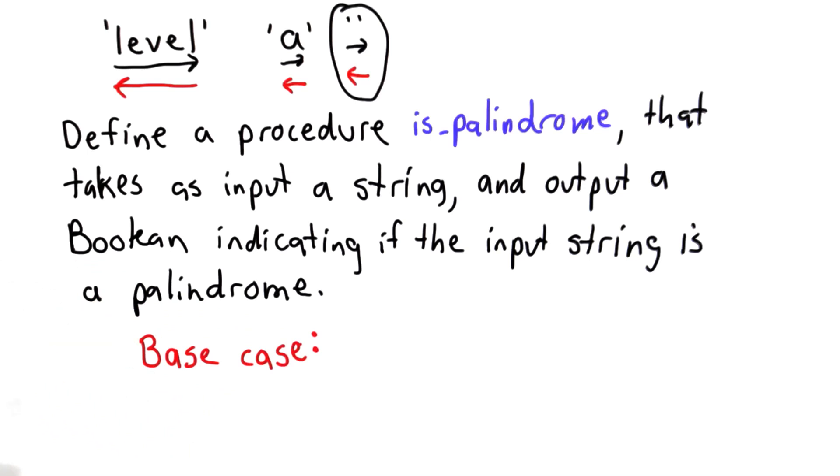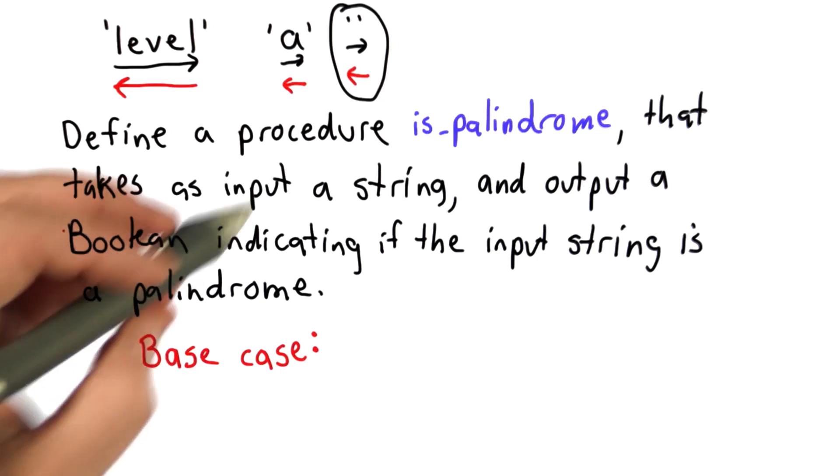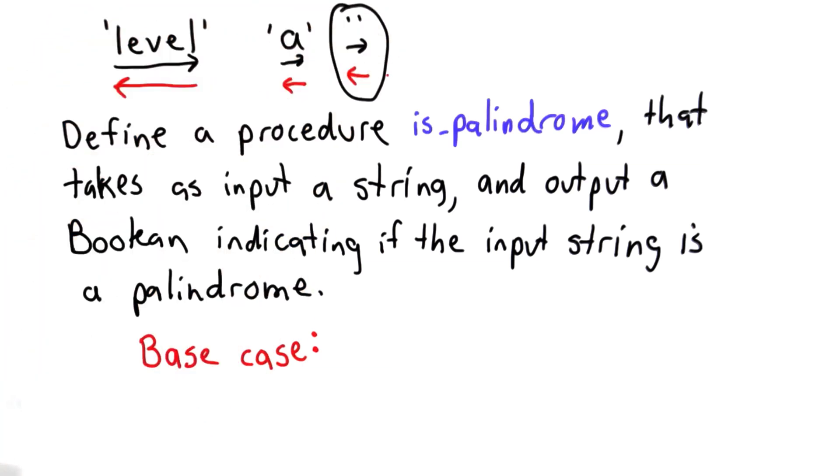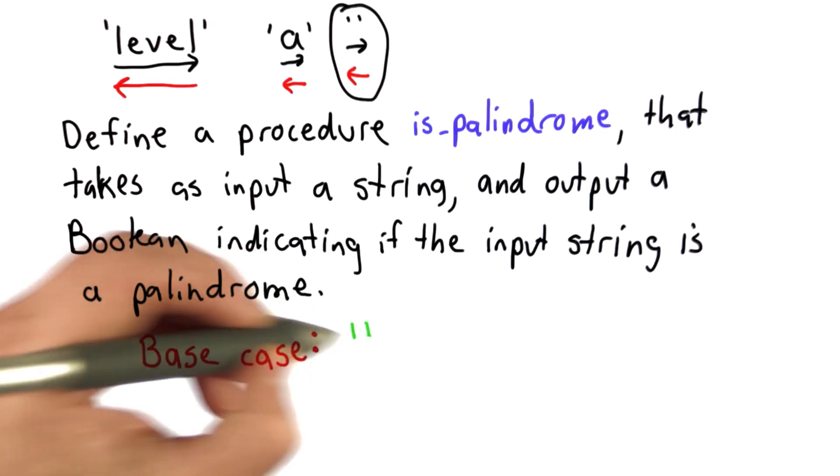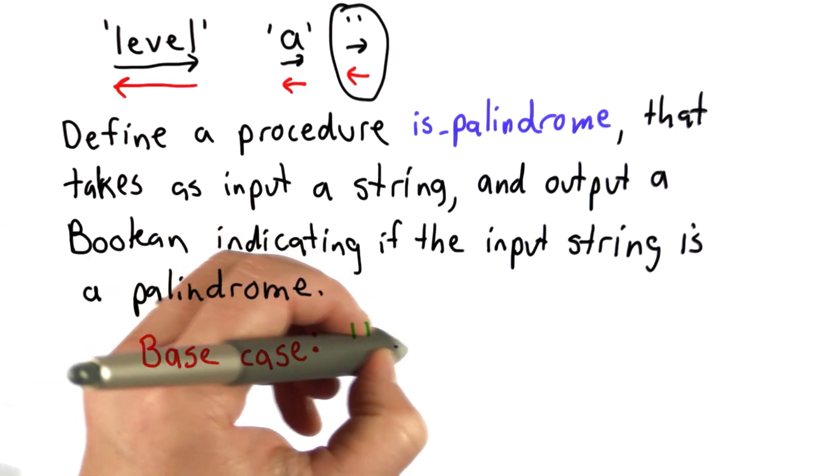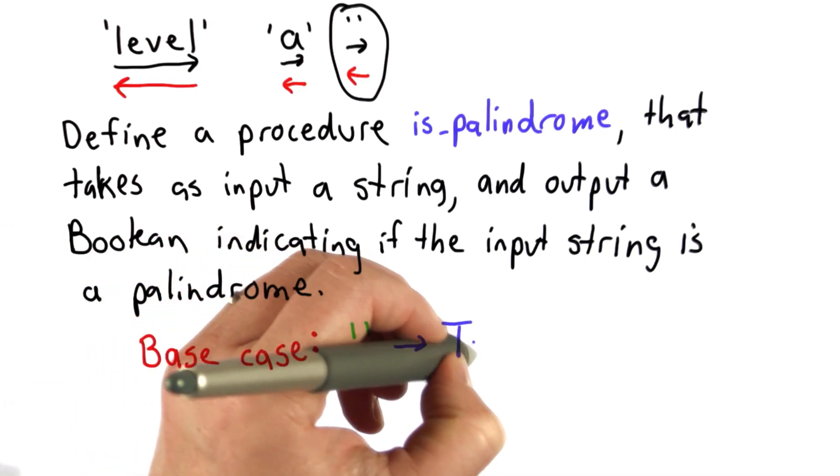When we do recursive procedures on strings, it's more likely that our base case is going to be the simplest string, which is the empty string. So we know that if the input is the empty string, the result of is_palindrome is true. The empty string is a palindrome.